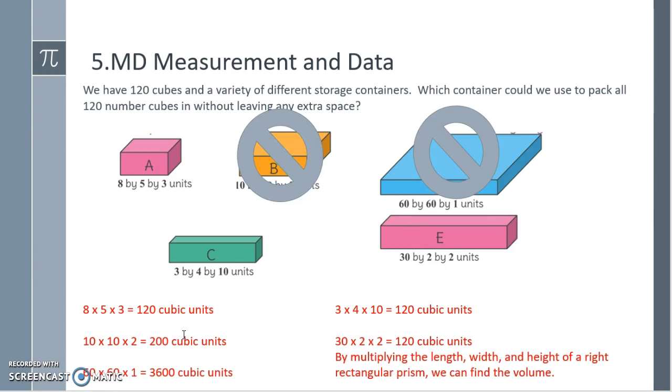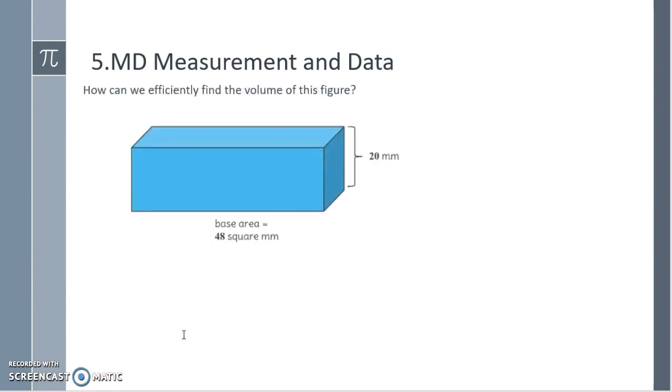How can we efficiently find the volume of this figure when I know that the base area is 48 square millimeters and the height is 20 millimeters? I can take the area of the base and multiply it by how many layers we have. Since we have 20 layers, we will take 48 times 20 to get 960 cubic millimeters.